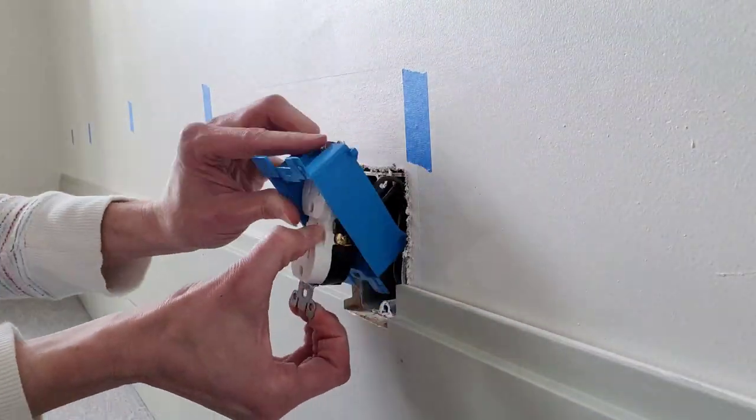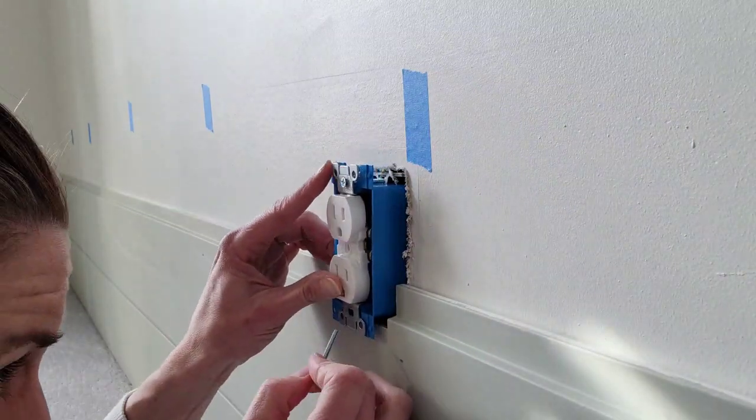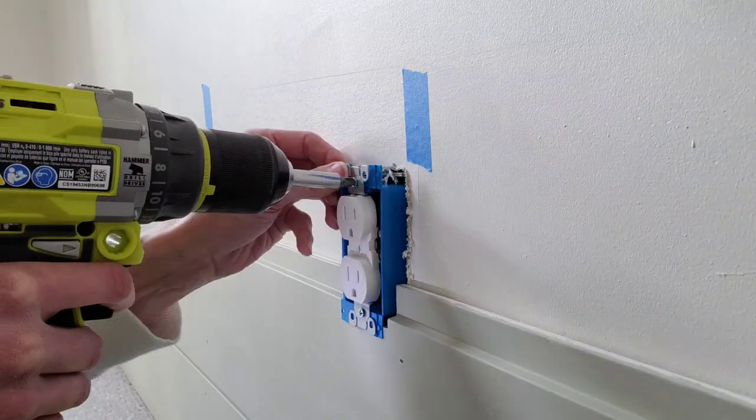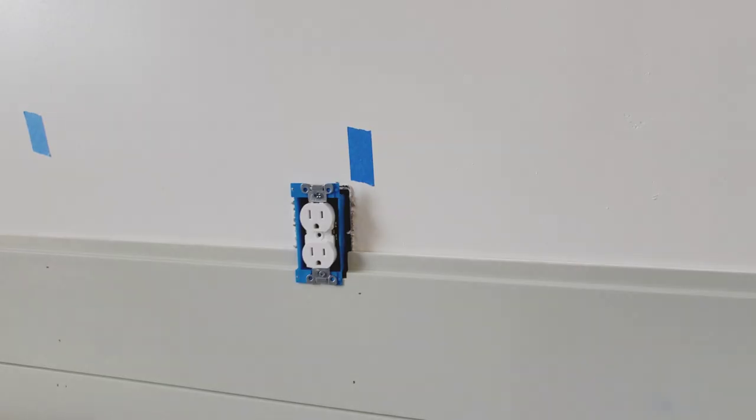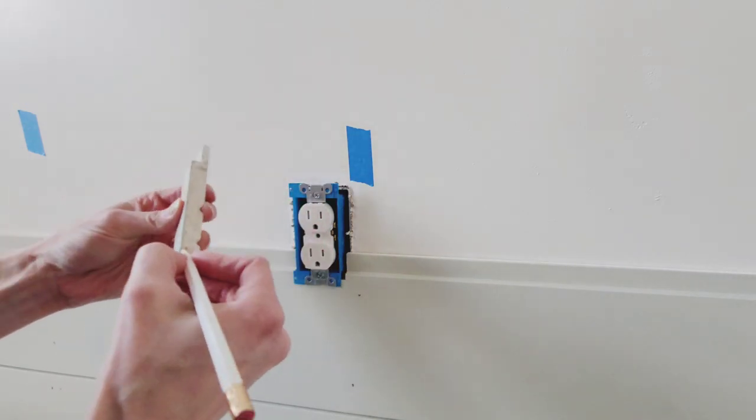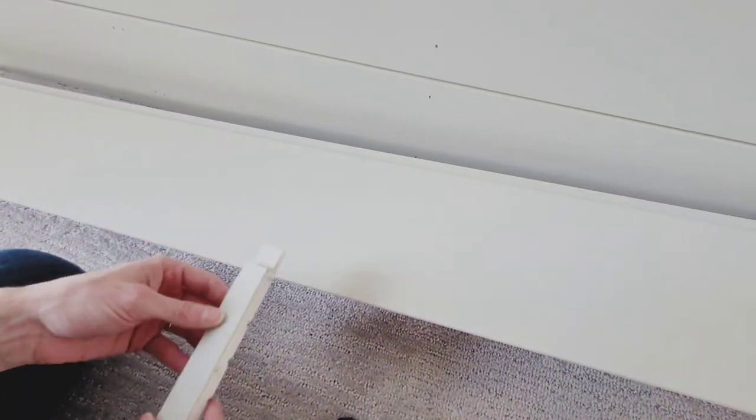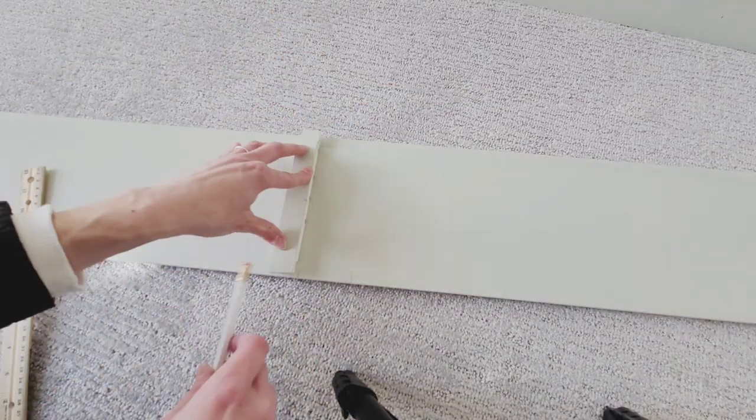You're going to want to cut the power before you unscrew all this and add your gang box extender. That's going to make it so your outlet is flush with the shiplap. Since you're popping out your wall half an inch, you want to pop out your outlet half an inch. Then you're going to use a piece of shiplap trim like I'm doing right here, and this will help you to mark your spot.